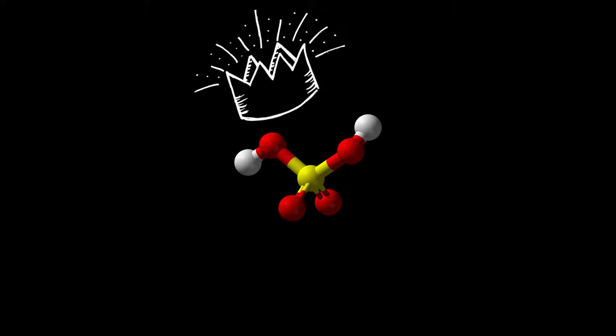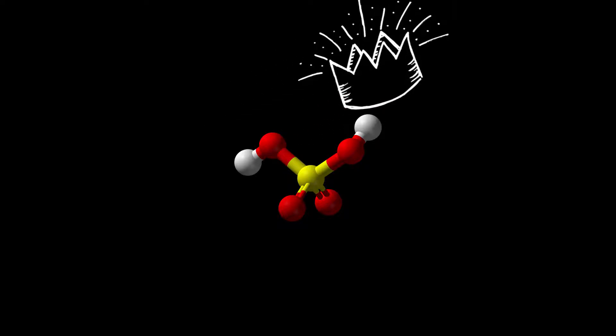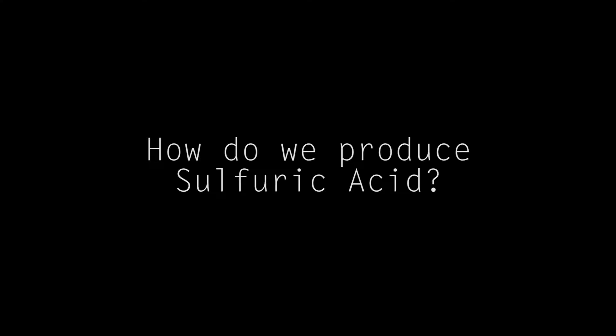It's often referred to as the king of chemicals because of how numerous its applications are as a raw material or a processing agent. However, this raises one major question for the most commonly used chemical in the world. How do we produce sulfuric acid?